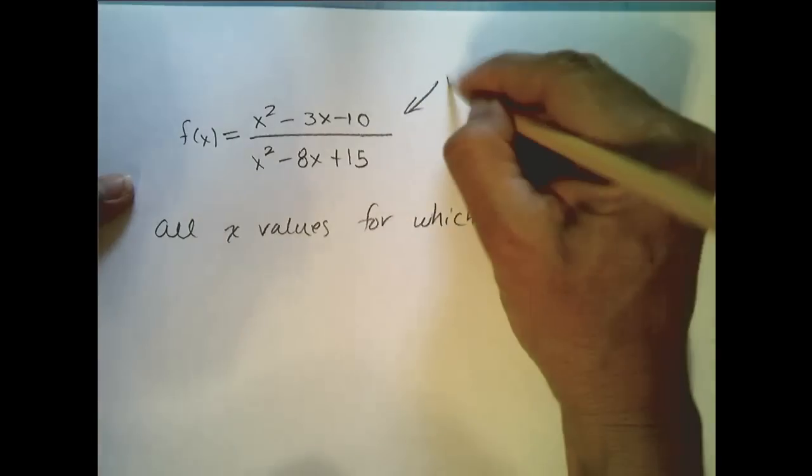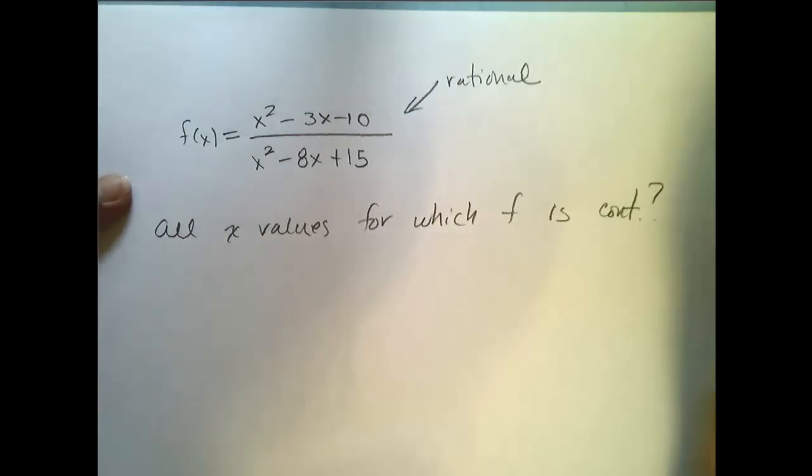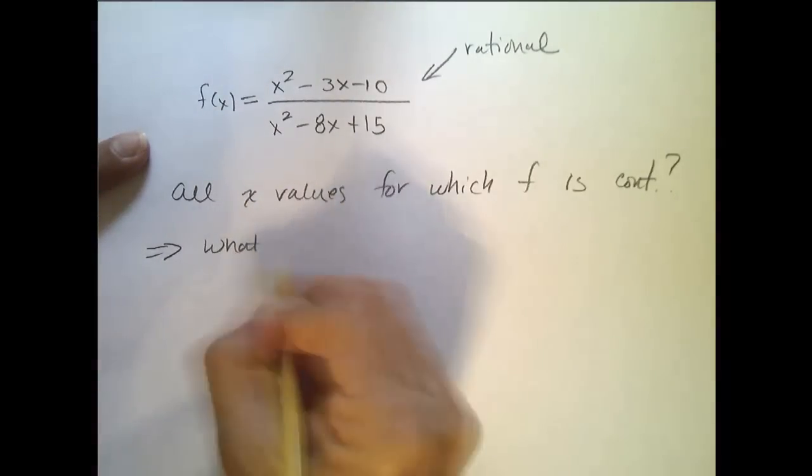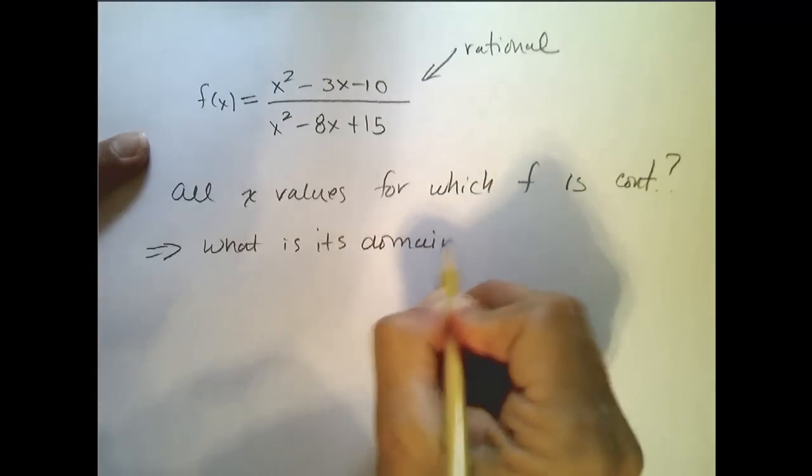Well, this is a rational function. A polynomial over a polynomial. Which means it's continuous everywhere on its domain. So this question becomes, what is its domain?